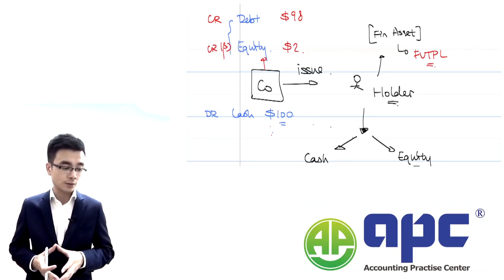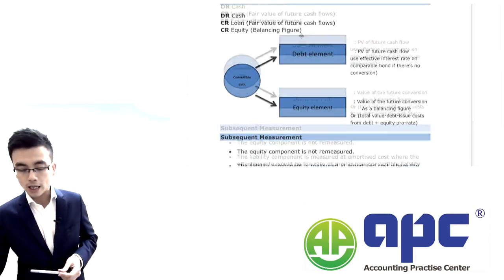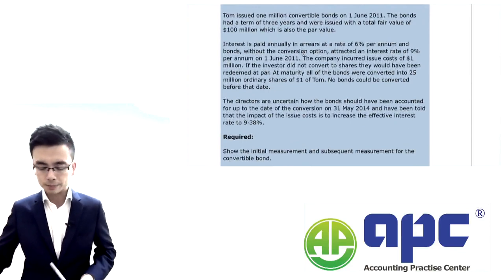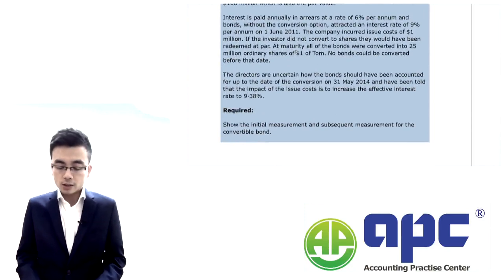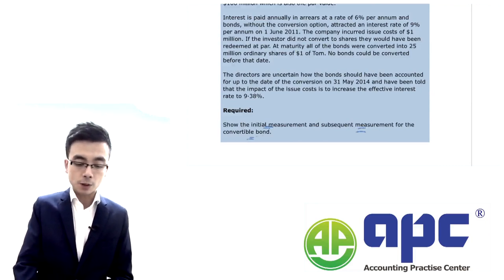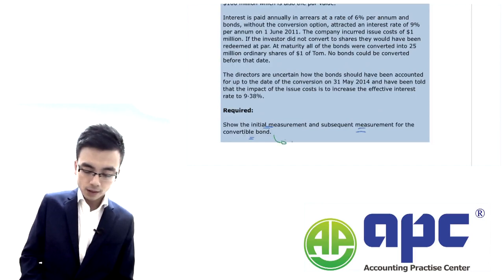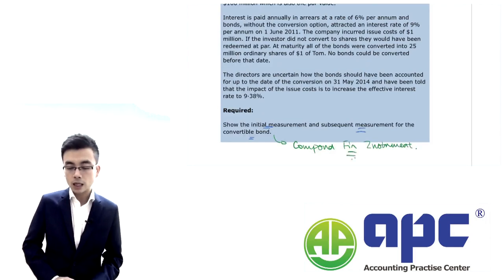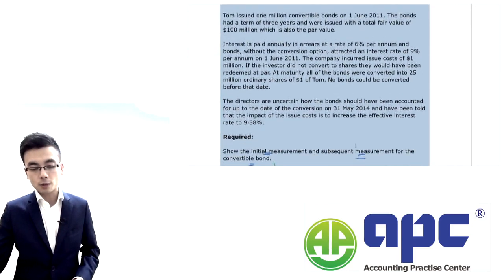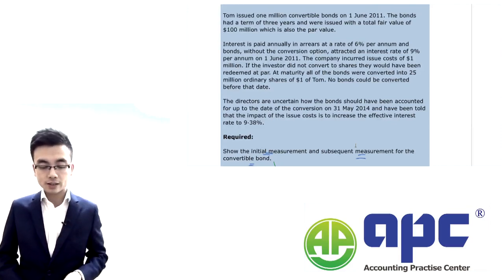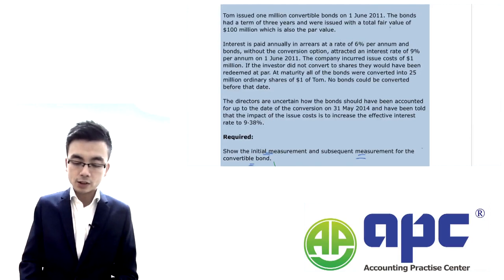We'll look at a scenario called Tom. The required task is to show the initial measurement and subsequent measurement for the convertible bond, which is the compound financial instrument. We're told that Tom issued one million convertible bonds on 1st June 2011. The bond has a term of three years and was issued at a total fair value of $100 million, meaning we received $100 million in cash.